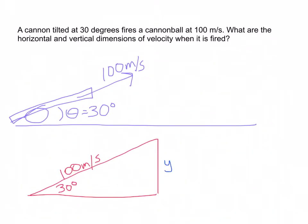I know I'm going to use this angle here. I know that the sine of 30 degrees is equal to Y over 100, and I know that the cosine of 30 degrees is equal to X over 100.